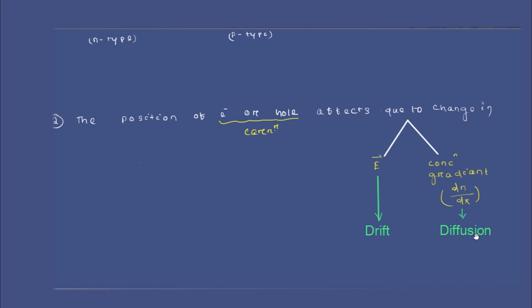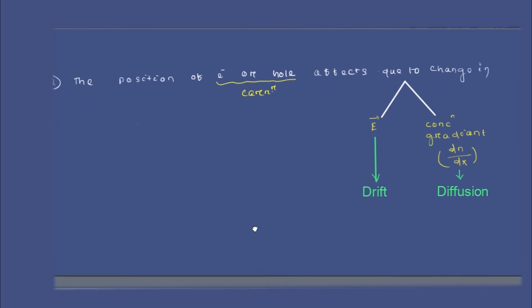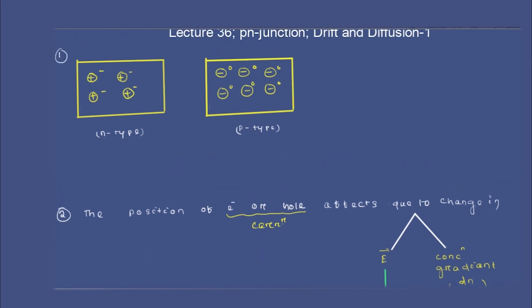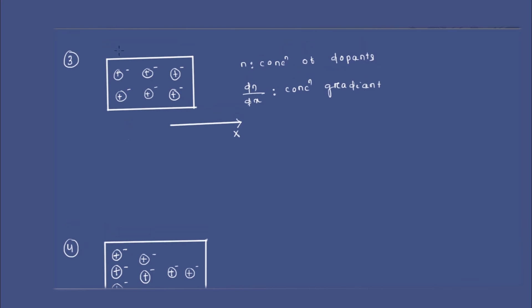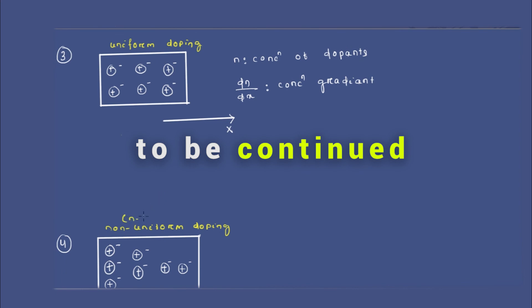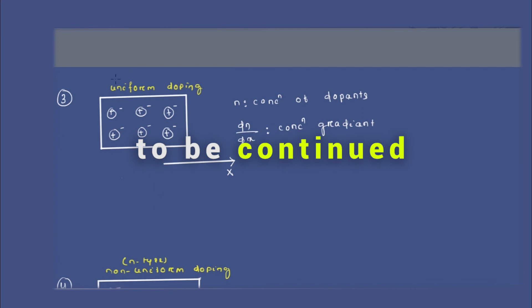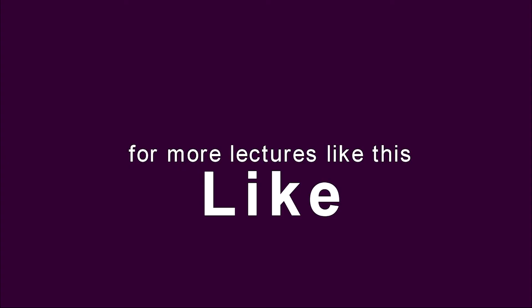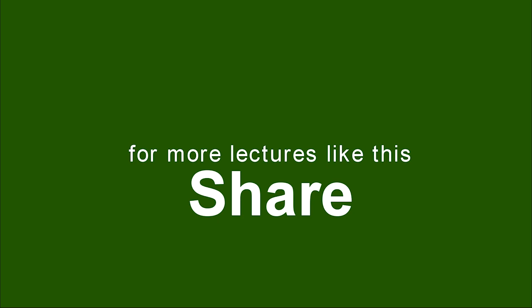So that is the concept of drift mechanism. Drift always happens due to the application of electric field — drift is associated with the application of electric field. Now let's get into the concept of diffusion. I have taken two kinds of doping: uniform doping and non-uniform doping. All these examples are taken for n-type doping.